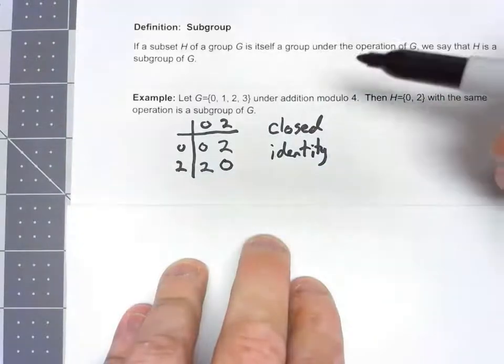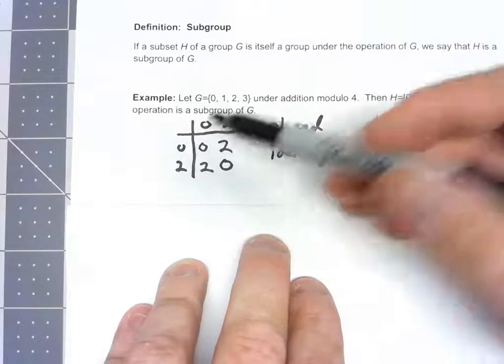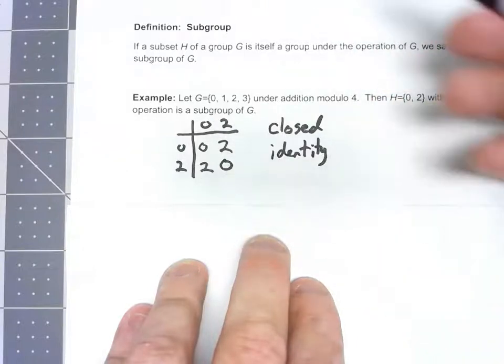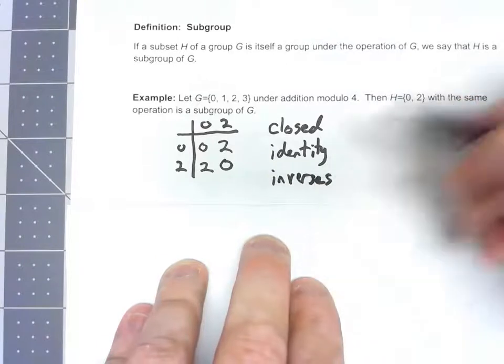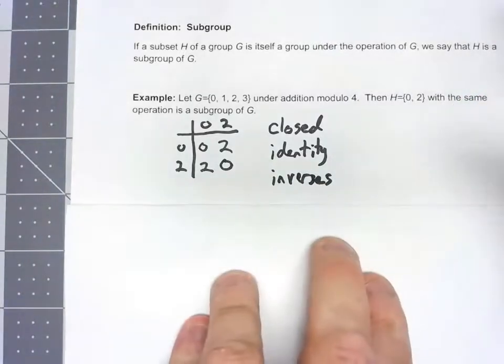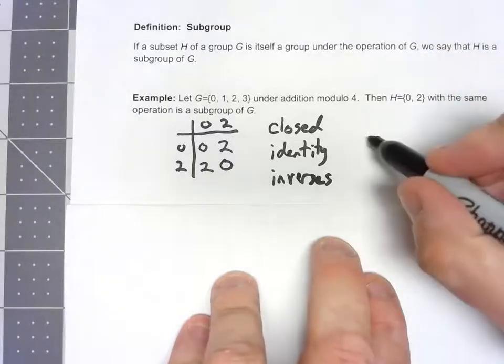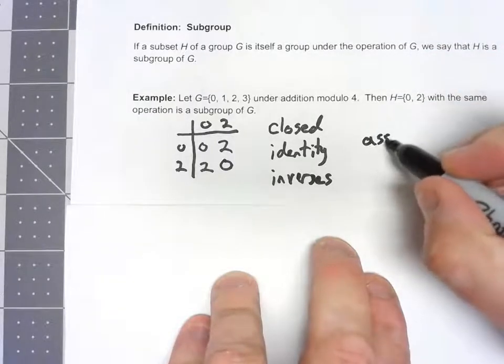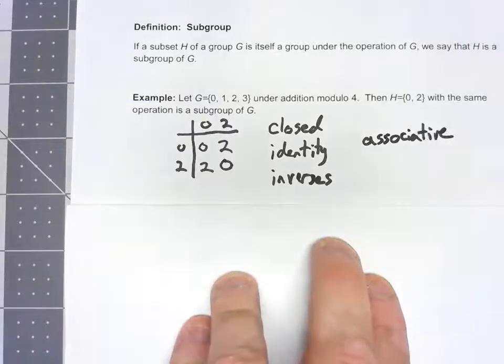And also from the Cayley table, we can see that we have inverses. 0 is its own inverse, and 2 is its own inverse. So the only other group property that we have to concern ourselves with is associativity. But again, this is all based on addition. We know addition is associative, so it is in fact associative.